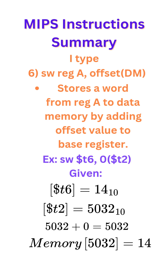Example: sw T6, 0(T2). We're given the contents of T6 and T2, so we would do 5032 plus 0, and then at data memory address 5032 we would store the value 14.